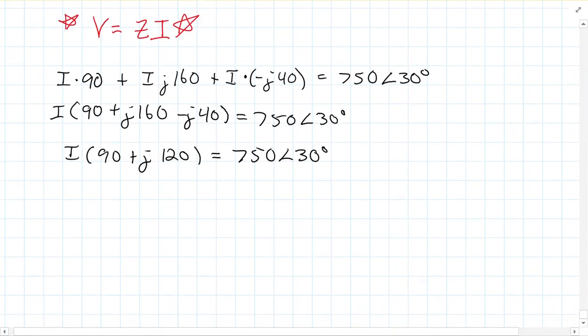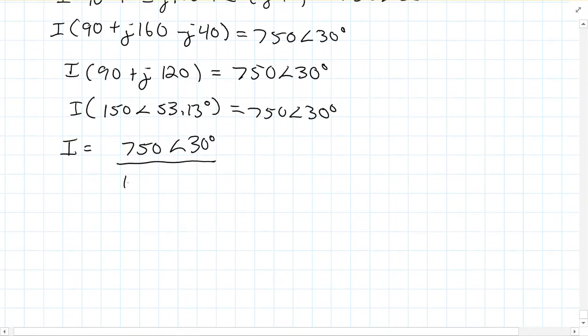So again, I just use my calculator to do that, and I get the current times 150, at an angle of 53.13 degrees. And this is equal to 750 at an angle of 30 degrees. So then my steady state current is simply 750 at an angle of 30 degrees, divided by 150 at an angle of 53.13 degrees. But again, that's easy to do, because remember, what do we do here? We do 750 divided by 150, which is 5, at an angle, and then when you're dividing, you subtract it, so it'd be 30 minus 53. So this would be at an angle of negative 23.13 degrees.